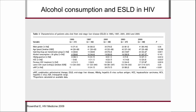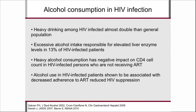Many studies — most not fully representative because the populations vary greatly between drug users, MSM, and immigrant communities — have pointed out that heavy drinking is more common in HIV patients. One study found that in 13% of cases, alcohol was responsible for elevated liver enzyme tests, and that heavy alcohol consumption impacts the immune system, so CD4 counts are lower even in untreated HIV patients. Heavy alcohol consumption may also be related to adherence and therefore HIV viral suppression.